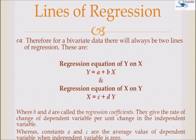In the first case, when y is dependent on x, b is the rate of change of y per unit change in x. Similarly, in the second equation, d is the rate of change of x per unit change in y. As for a and c, they are the values of y and x respectively when the values of x and y are 0 — formally, a and c are the average value of the dependent variable when the independent variable is 0.